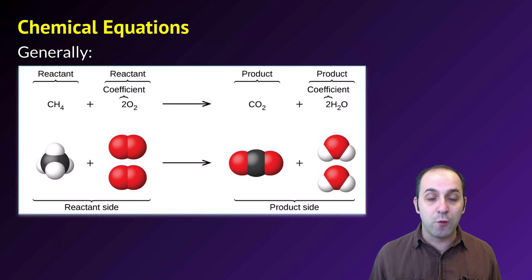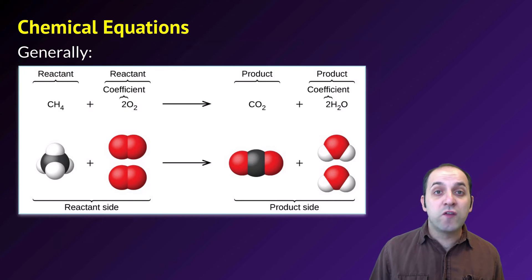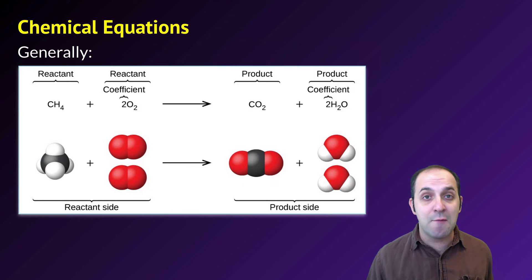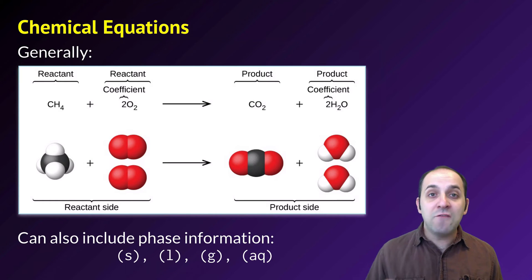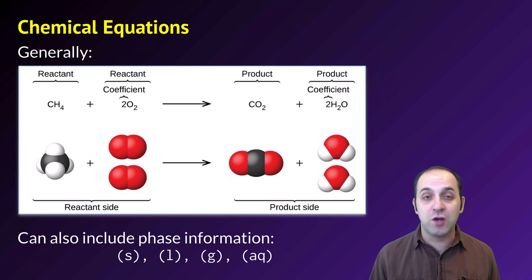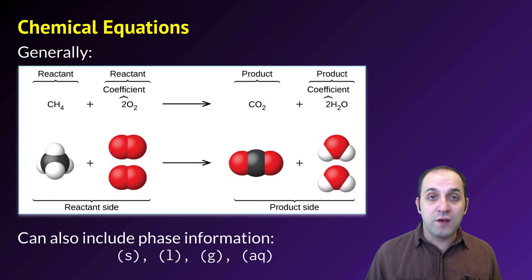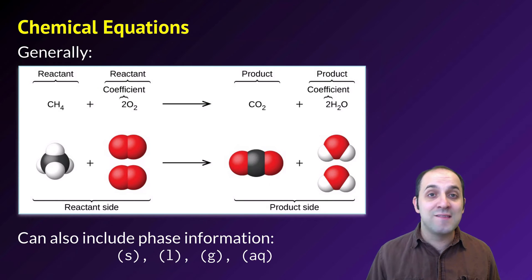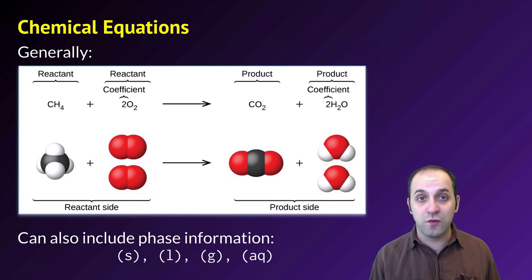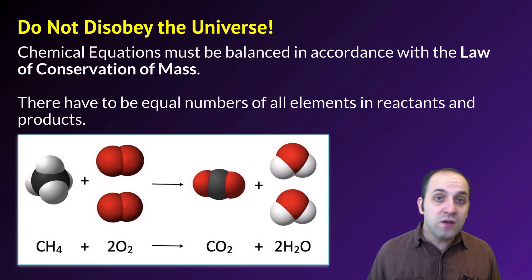The plus signs are actually more like commas — they just list the materials that participate in or are produced from the reaction. When we write a chemical equation, we use coefficients: numbers in front of the chemical formulas representing the total number of those substances participating in the balanced reaction. You'll also often get state or phase information: (s) for solid, (g) for gas, (l) for liquid, and (aq) for aqueous — dissolved in water.